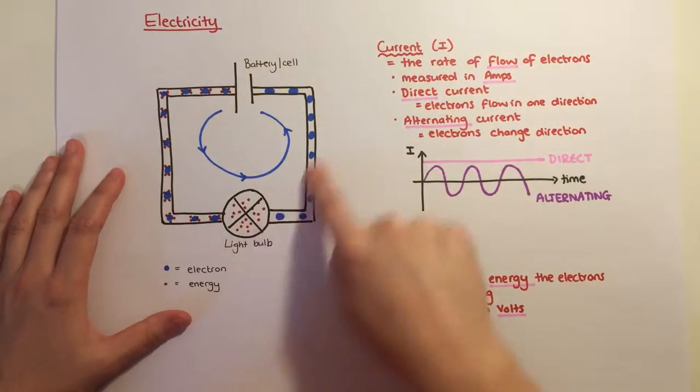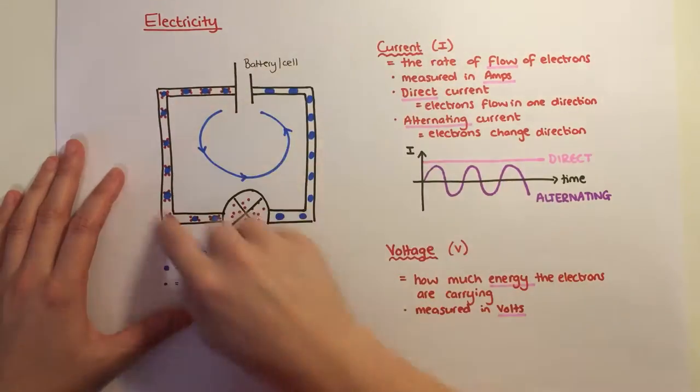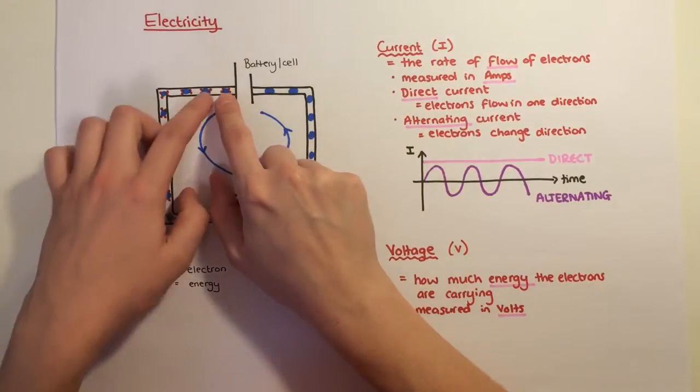Electricity then, the basics. So here's a very simple circuit with a battery, a cell and some wires. What is going on inside?